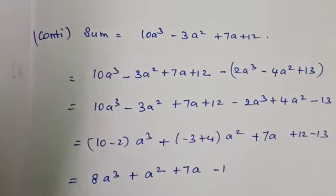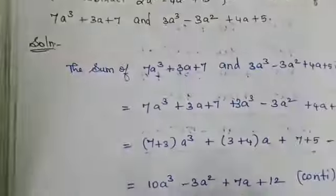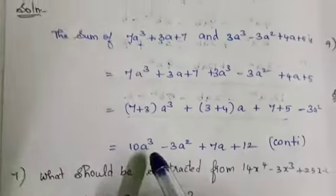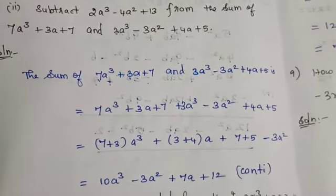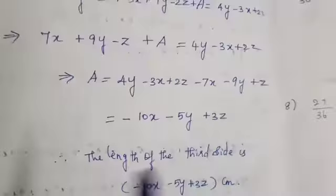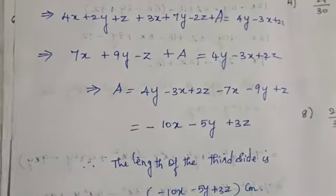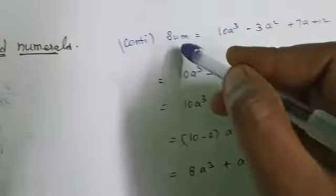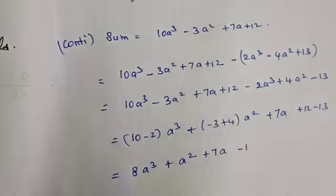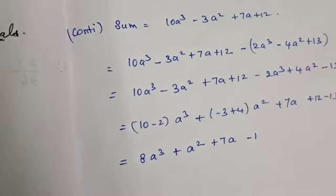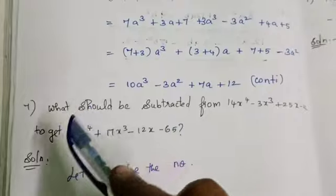So the answer is 8a³ plus a² plus 7a minus 1. That is the answer for the sixth sum. The sixth sum continues on the next page — I put 'continued.' Everyone copy this. Now I go to the seventh sum.